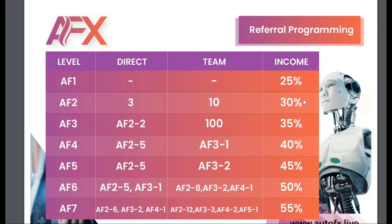The next rank is AF3 or rank three. You need at least two of your direct referrals to become AF2 members, and you need a total of 100 in your team. Once achieved, you become a rank three member and start earning 35% of personal referrals — 35% of every referral that comes into your team.